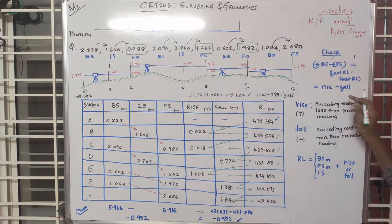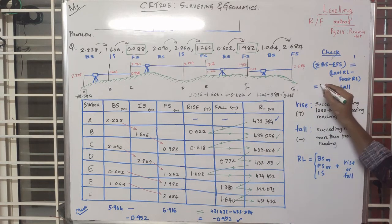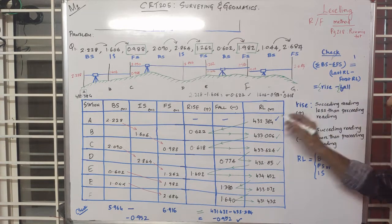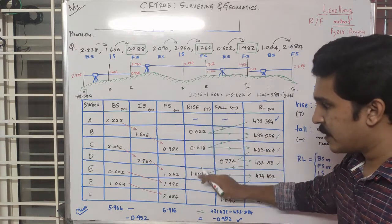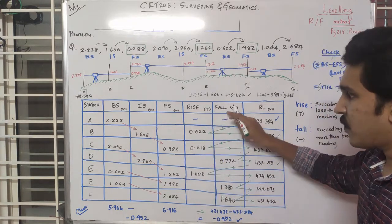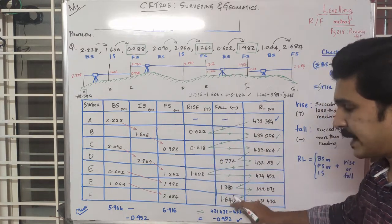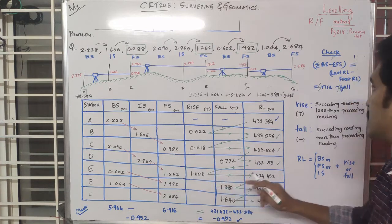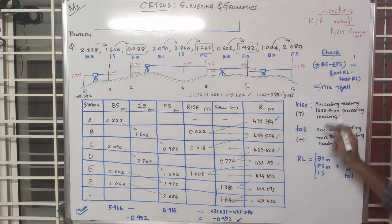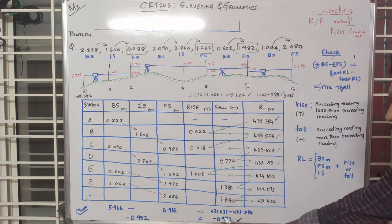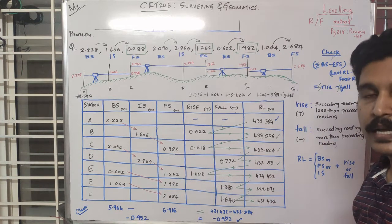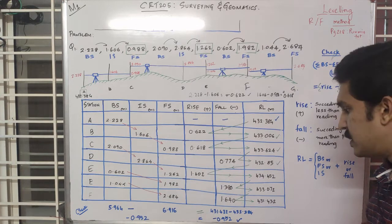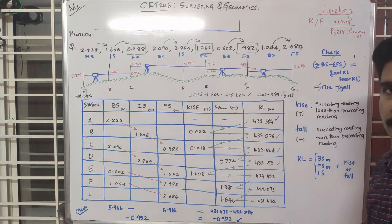Sum of rise minus sum of fall — what is the rise? We add the values from the rise and fall columns. This value works out to minus 0.952, that is 1.952, confirming the arithmetic check for the rise and fall method is correct.